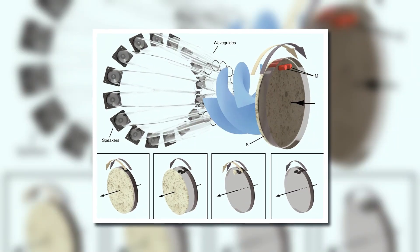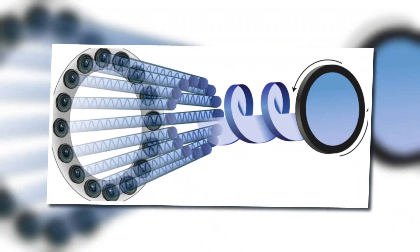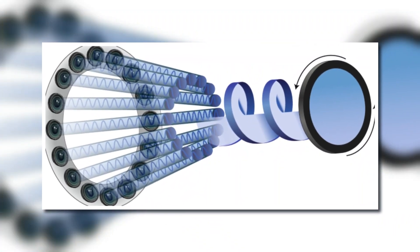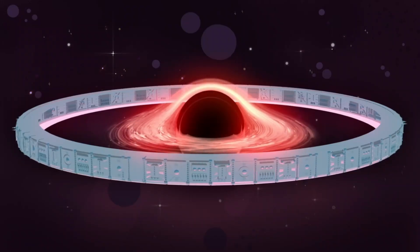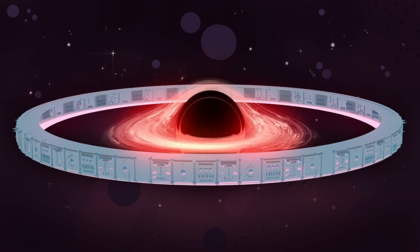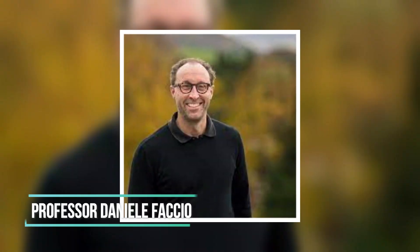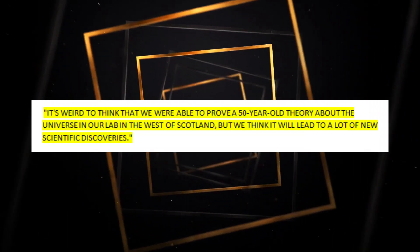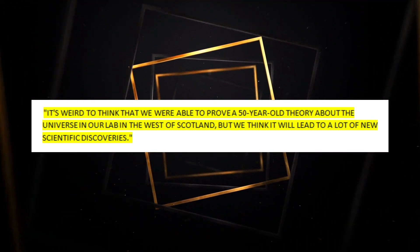The team put together a ring of speakers to make the spinning effects of a black hole. Then they watched as sound wave beams got bent and twisted, just like Penrose's original object. We couldn't be happier that, 50 years after the theory was first proposed, we were able to test some very strange physics. Professor Daniele Faccio says so. It's weird to think that we were able to prove a 50-year-old theory about the universe in our lab in the west of Scotland, but we think that it will lead to a lot of new scientific discoveries.